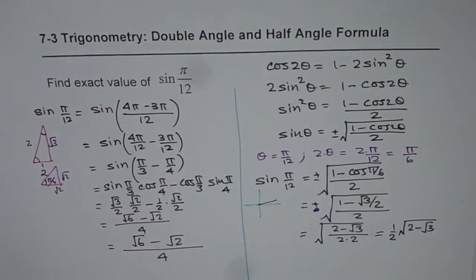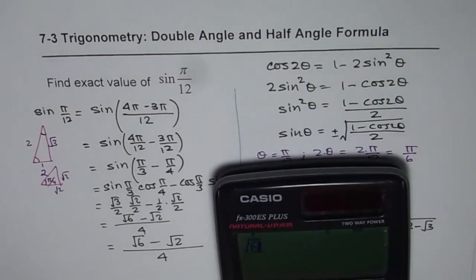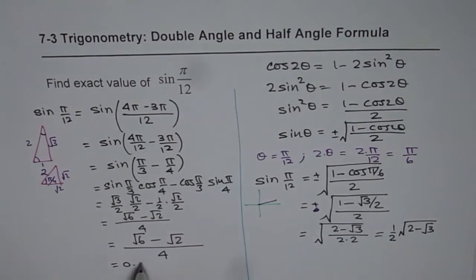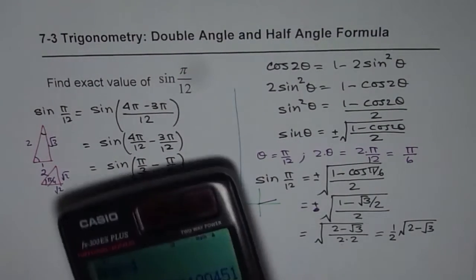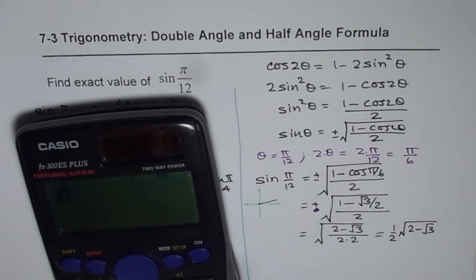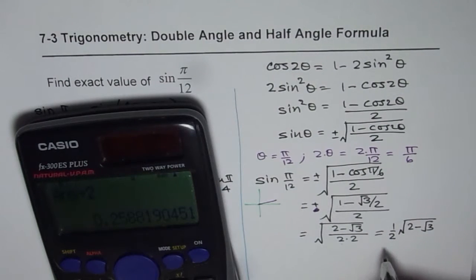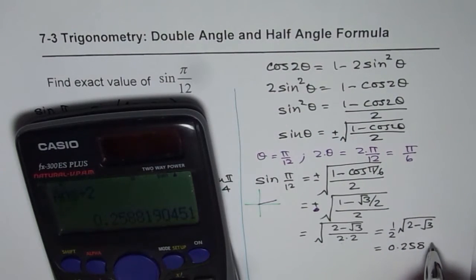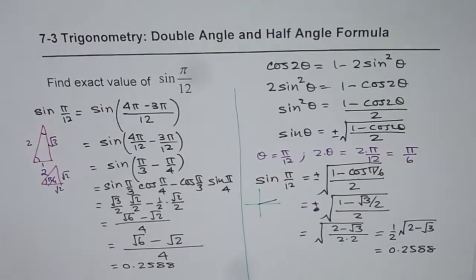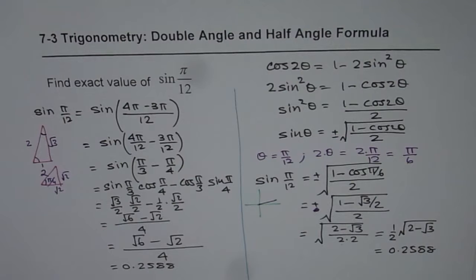Let us now check these values using the calculator. We have (√6 - √2)/4, which equals 0.2588. On the other hand, (1/2)√(2 - √3) also equals 0.2588. So either way you do it, you get exactly the same answer. That is how you can solve for sine(π/12) in two different ways.